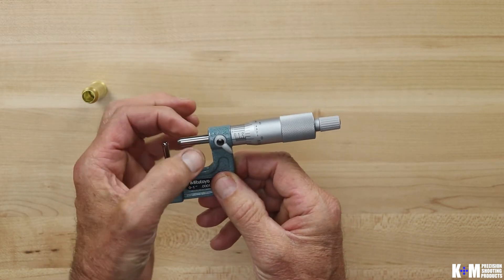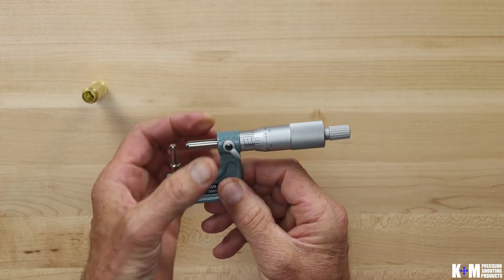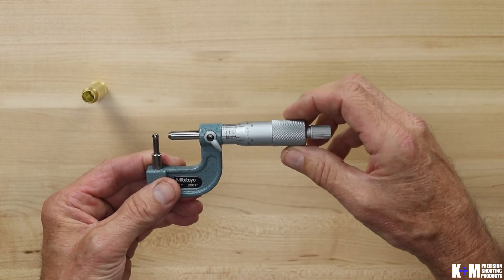This is referred to as the anvil. This is the spindle of the micrometer and then this is the thimble, the part you actually grab and turn.